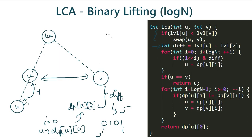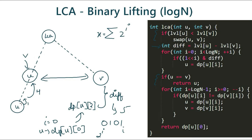Now, if after climbing up the new U equals V, then the LCA is U itself. This is because if V was an ancestor of U, then the ancestor of U at the same level as V will be V itself. So after climbing up, if U and V are the same, that node is the LCA.